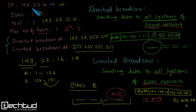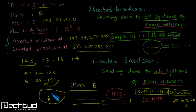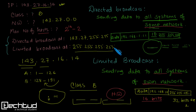So the limited broadcast address is 255.255.255.255. This address does not change regardless of the IP address, because for limited broadcast, all 32 destination bits are always 1. The limited broadcast address is the same for all networks. I hope this is clear — if you have any doubts, ask in the comment section. See you in the next video, thanks for watching.